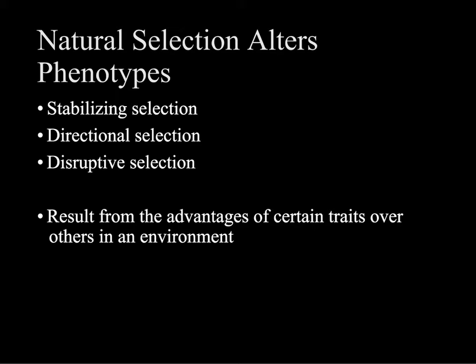As we know, natural selection alters phenotypes — the traits that we can see within organisms — and results in adaptations. There are three major types of selection: stabilizing, directional, and disruptive.